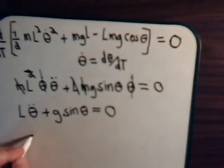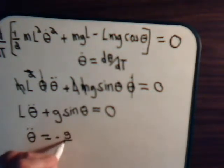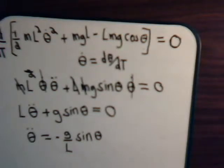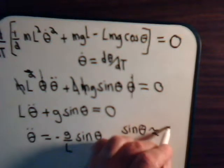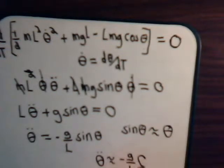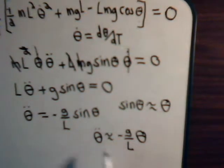So theta-dot-dot, the angular acceleration, equals minus g over L times the sine of theta. In most textbooks, for very small angular displacements, the sine of theta is approximated as theta itself, giving theta-dot-dot approximately equals minus g over L times theta. This approximation is only valid for very small angles.